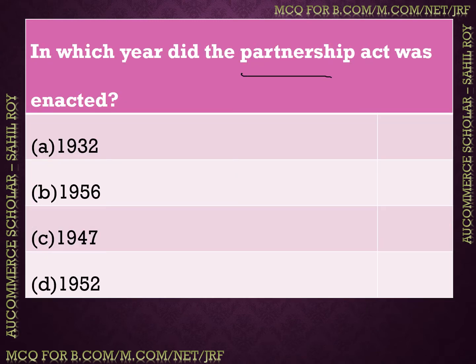From here, our partnership section begins. Partnership is very interesting and easy, but there are many technicalities. Let's start with the first partnership question: in which year was the Partnership Act enacted? Options: (A) 1932, (B) 1956, (C) 1947, (D) 1952. The correct answer is Option A — the Partnership Act was enacted in 1932.